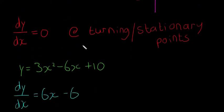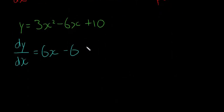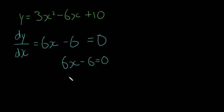because we want to find the turning of the stationary point, we're going to let this equal to zero. Okay. We'll drop down here: 6x minus 6 is equal to zero. That means 6x is equal to 6, and x is equal to 1.